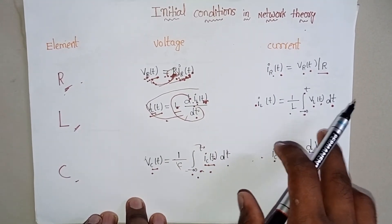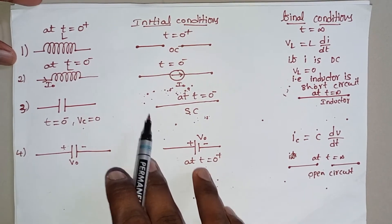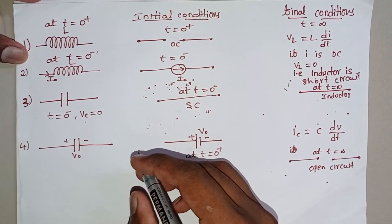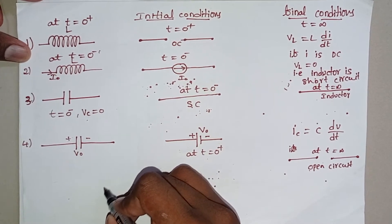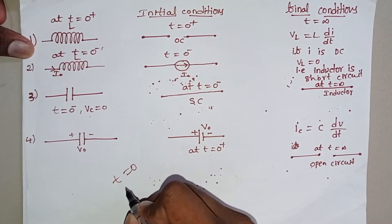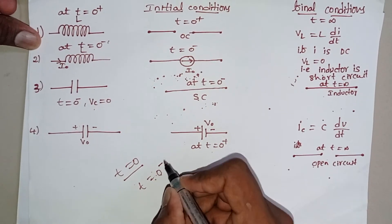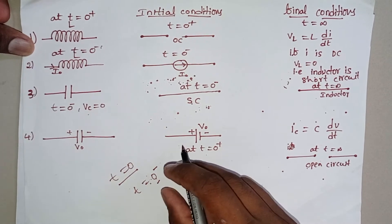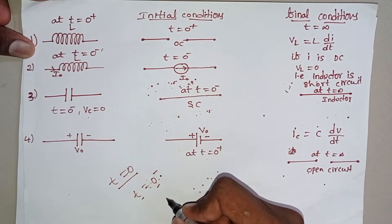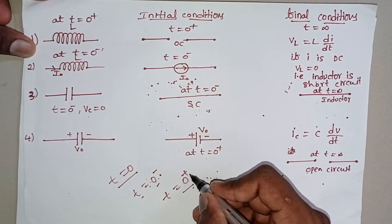Let's see the initial and final conditions of RLC circuit elements, considering first the inductor and capacitor. Initial conditions refer to before switching, after switching, and at the time of switching. T = 0 means at the time of switching. T = 0− indicates just before switching — what is the response just before we switch off the supply. T = 0+ means after switching, within milliseconds after the switching — what is the response.